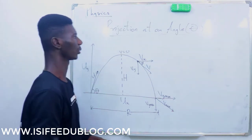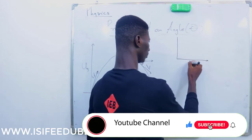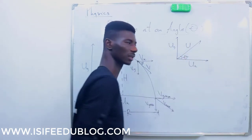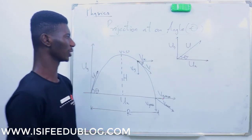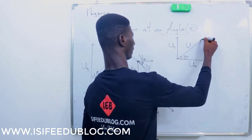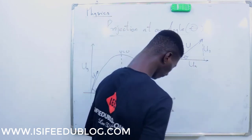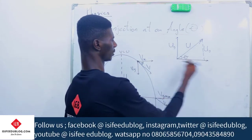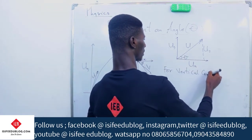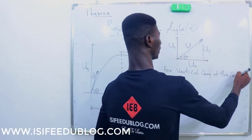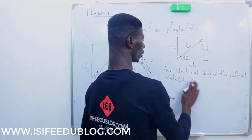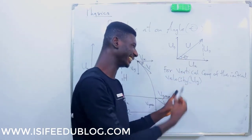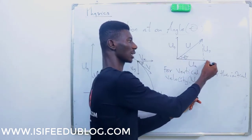If I bring out this diagram, we have ux and uy, with theta shown. Now, how do you resolve to the horizontal and to the vertical? For the vertical component of the initial velocity, which is uy — uy means initial, while v means final velocity. The vertical component uses the y-axis.